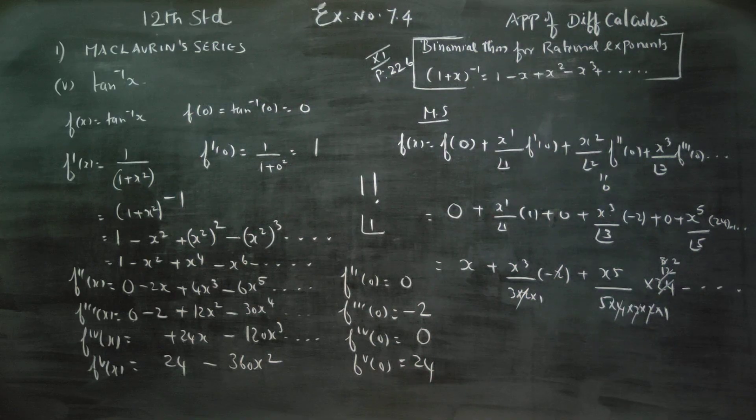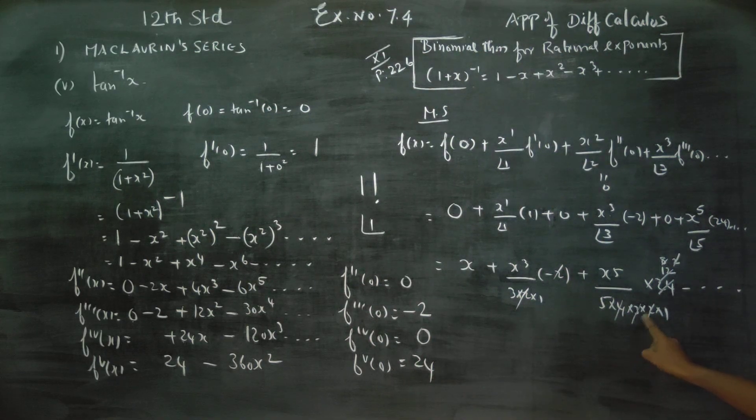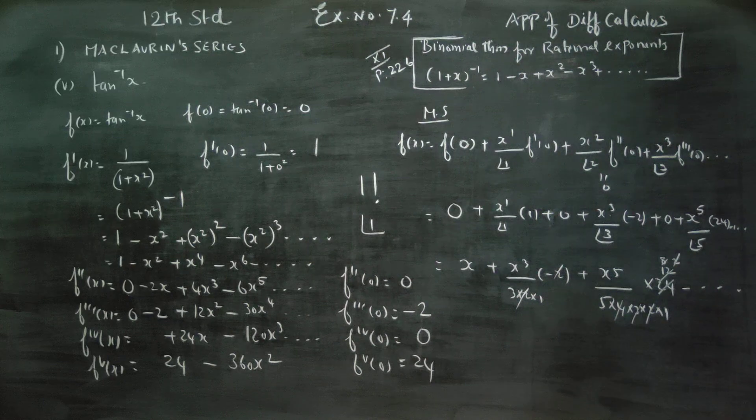Now the denominator terms will be cancelled. 4, 3s are 12; 12, 2s are 24 — and 24 will be cancelled out with the numerator factors.